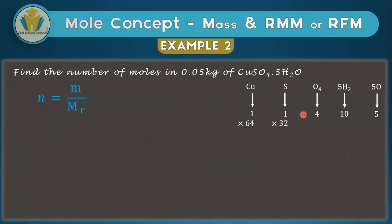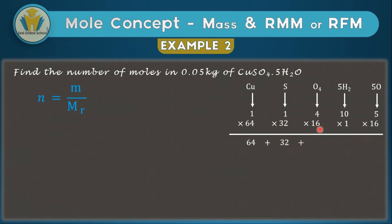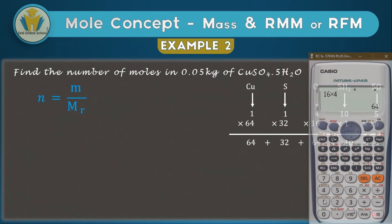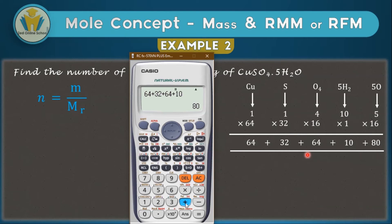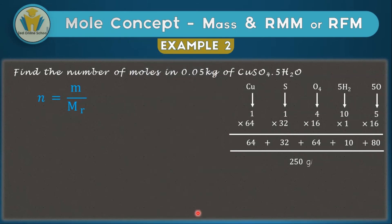Continuing the molecular mass calculation: oxygen is 16 and hydrogen is 1. We calculate 16 × 4 = 64 for the four oxygens in CuSO₄, 10 × 1 = 10 for the ten hydrogens, and 16 × 5 = 80 for the five oxygens in the water. Adding them all together: 64 + 32 + 64 + 10 + 80 = 250. So the molar mass of hydrated copper sulfate is 250 g/mol, meaning 250 grams of this compound equals one mole.